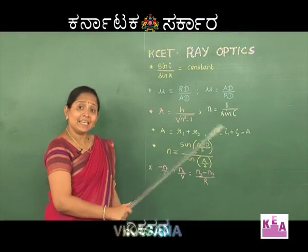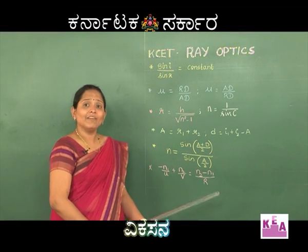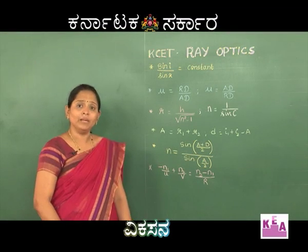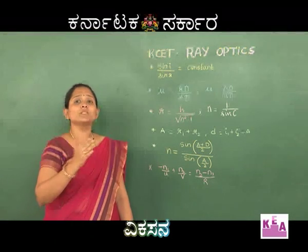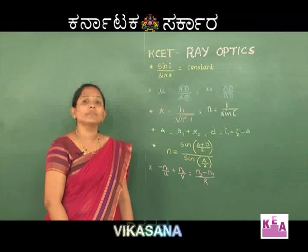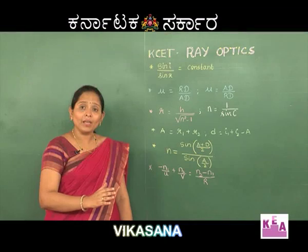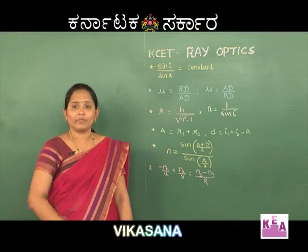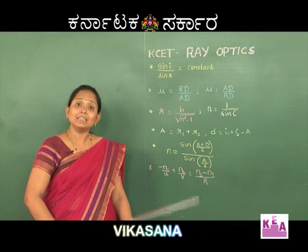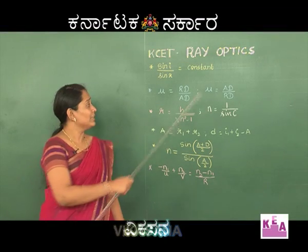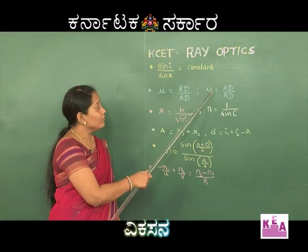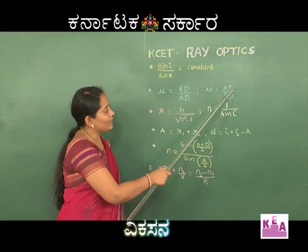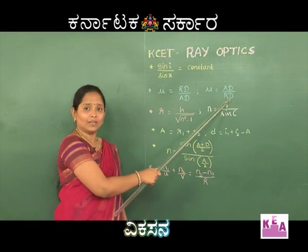In the second case, when an object is placed in the rarer medium and the observer is viewing from the denser medium, the image is formed very far away from him. In this case, the refractive index is written as μ = apparent depth / real depth.